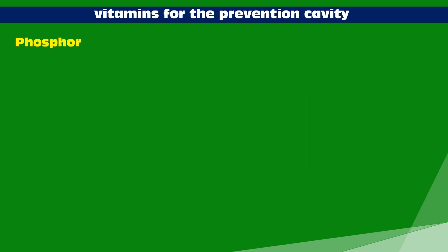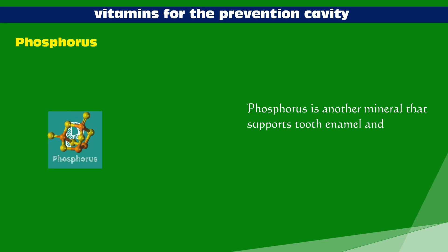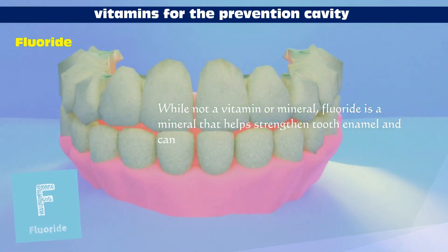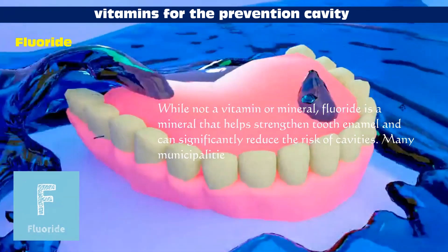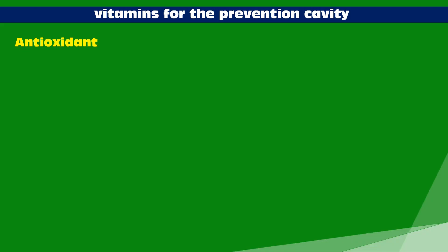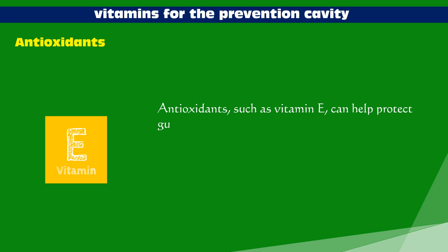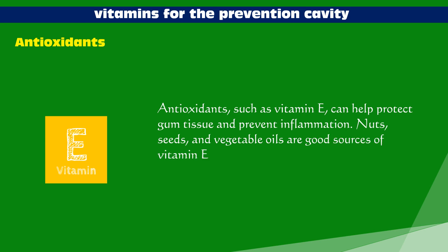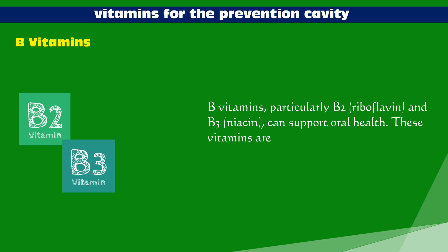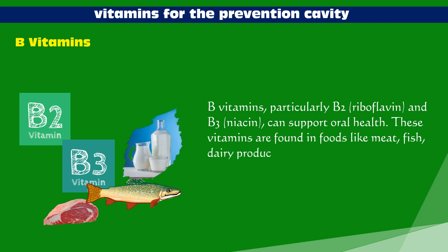Phosphorus is another mineral that supports tooth enamel and is found in foods like dairy products, nuts, and lean meats. Fluoride, while not a vitamin, is a mineral that helps strengthen tooth enamel and can significantly reduce the risk of cavities — many municipalities add fluoride to tap water, and it is also present in toothpaste and mouthwash. Antioxidants such as vitamin E can help protect gum tissue and prevent inflammation — nuts, seeds, and vegetable oils are good sources. B vitamins, particularly B2 (riboflavin) and B3 (niacin), can support oral health and are found in foods like meat, fish, dairy products, and whole grains.